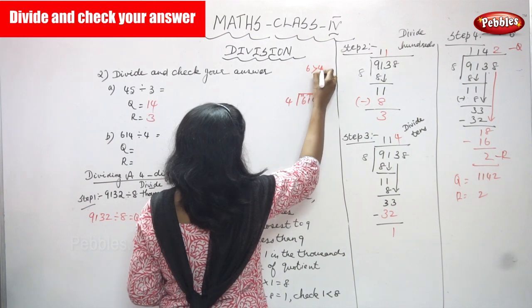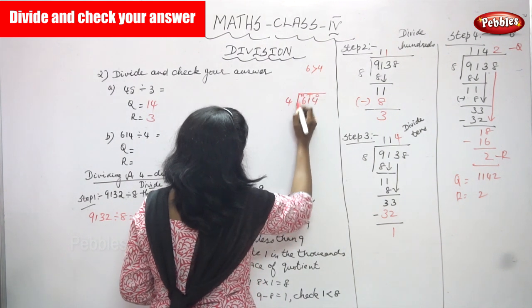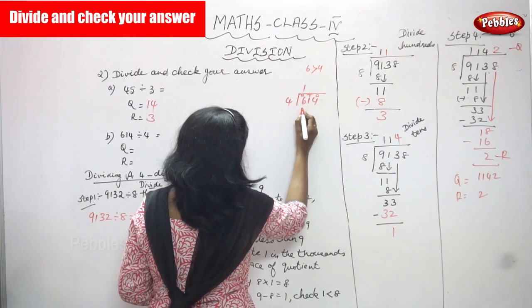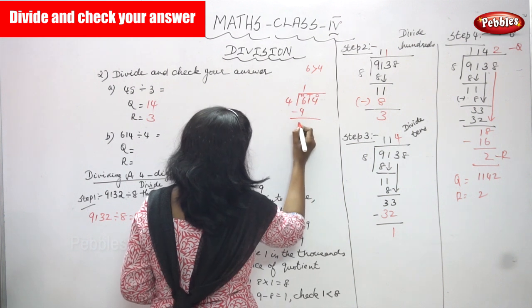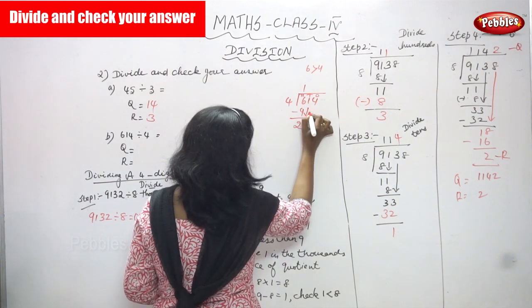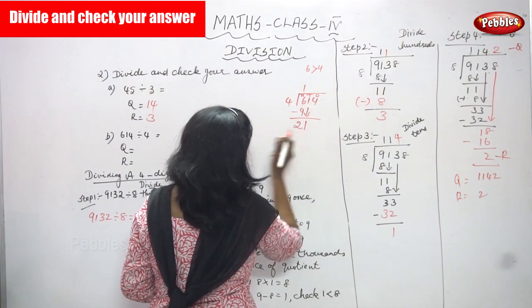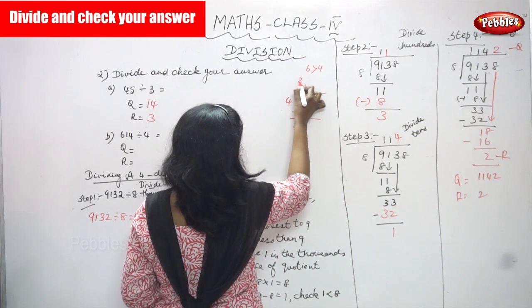6 is greater than 4, so I must use the 4 times table. 4 ones are 4. So 6 minus 4 gives 2. Bring down the 1. So the number is 21.